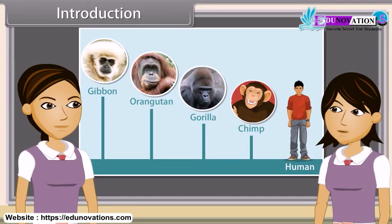Okay, do you want to say that this chart shows that human beings had chimpanzees as their ancestors, chimpanzees' ancestors were gorillas and so on? Yes, let me explain to you in detail how various life forms were evolved on the earth, one after the other.